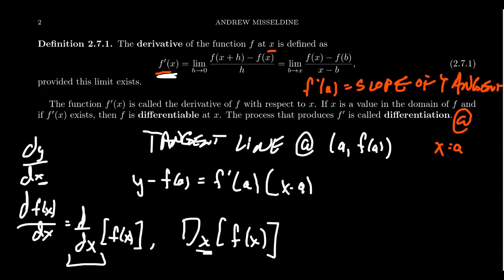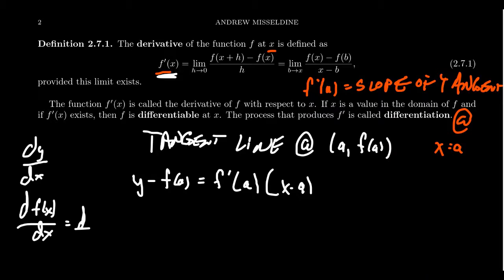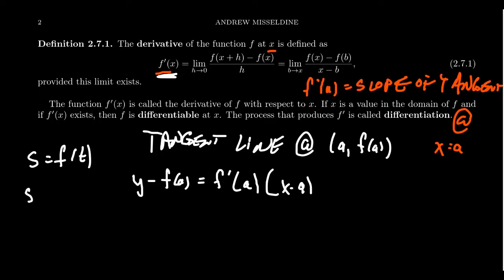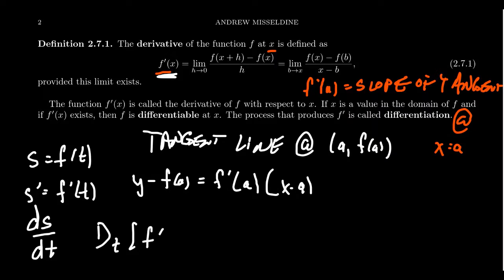The notation changes appropriately when variables change. For example, if we have s equals f of t — like a position function in physics where s is distance and t is time — the derivative s prime, or f prime of t, can also be written ds/dt, or d/dt of f(t). So we might change the variables, but the notation changes appropriately.